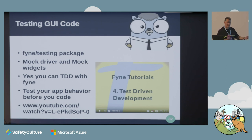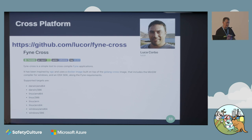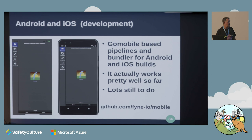We have a YouTube channel with a bunch of tutorials - all the links are there, go have a look. For cross-compilation, we've got an online service using a Docker pipeline tool built by one of our contributors. For Android and iOS, you can take your Fyne application and using our Go Mobile-based build pipeline, convert it directly to an Android or iOS application, pixel perfect.